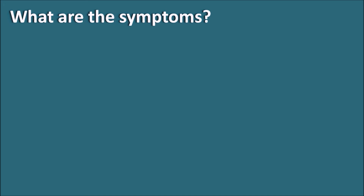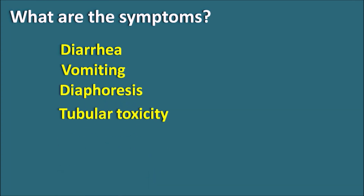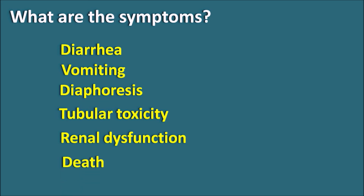What are the symptoms? Probenecid increases Methotrexate toxicity, which is especially important because Methotrexate is given at high doses in cancer treatment. When Methotrexate levels are excessively elevated, toxic symptoms appear — initially diarrhea, vomiting, diaphoresis, and tubular toxicity causing renal dysfunction. Accumulated Methotrexate impairs folic acid function, producing megaloblastic anemia and impairing nucleic acid synthesis. Combined with tubular toxicity and renal dysfunction, if untreated, it may lead to the patient's death. Therefore, whenever Probenecid is given with Methotrexate, the dose of Methotrexate must be adjusted to prevent toxicity.